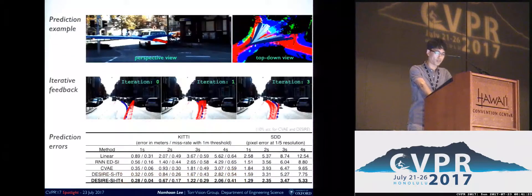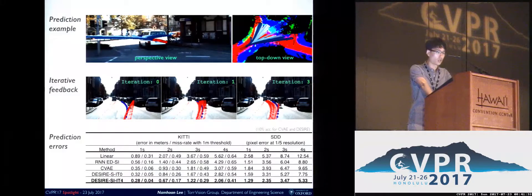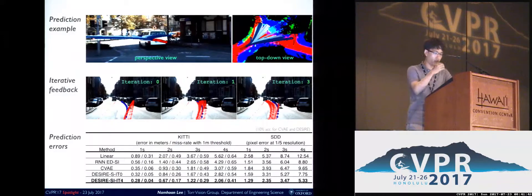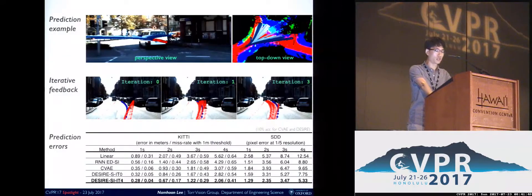Here are the results. The first row shows the prediction example. The white van may steer left or right while trying to avoid a collision with other dynamic agents. DESIRE produces accurate future predictions that correspond well with the scene context. In the second row, we show the effect of iterative feedbacks — as we iterate, the generated future hypothesis gets refined constantly. Lastly, compared to other baselines, DESIRE achieves the lowest error with just a few samples.